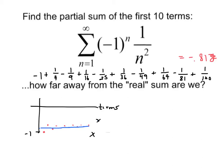So when we say how far from the real sum are we, we can actually do what's called an error bound. And the error bound in an alternating series, this is really for alternating series because other series don't have this nice little bounce back and forth.